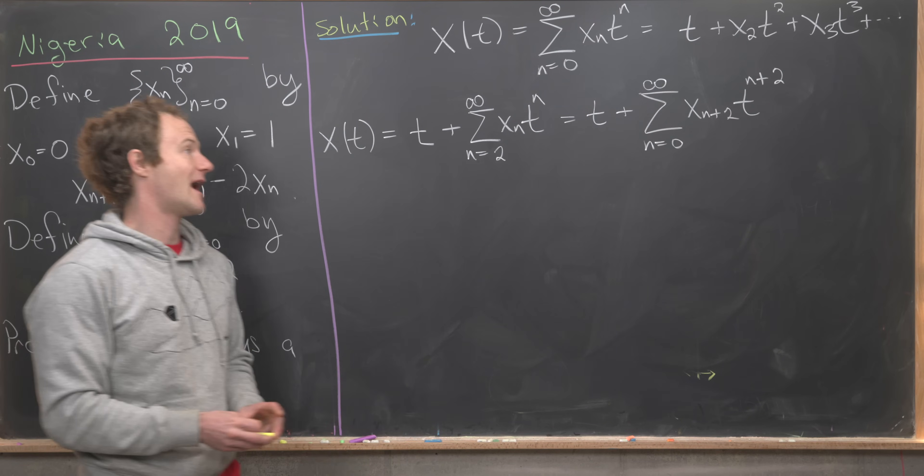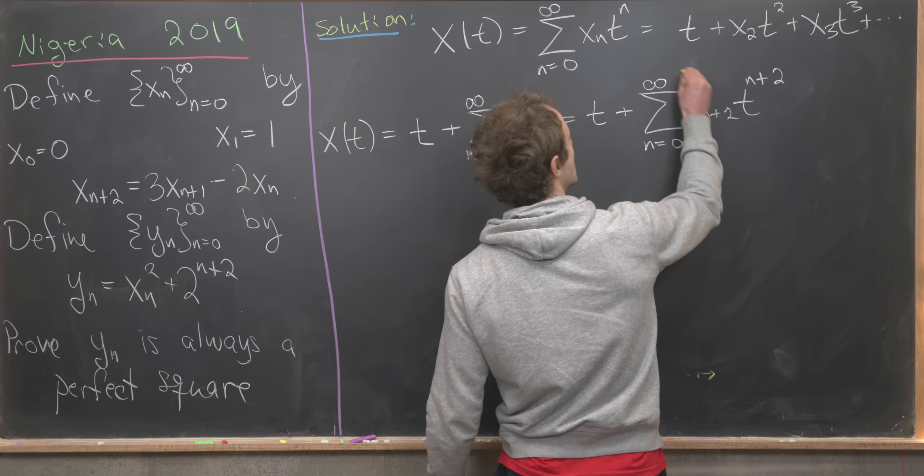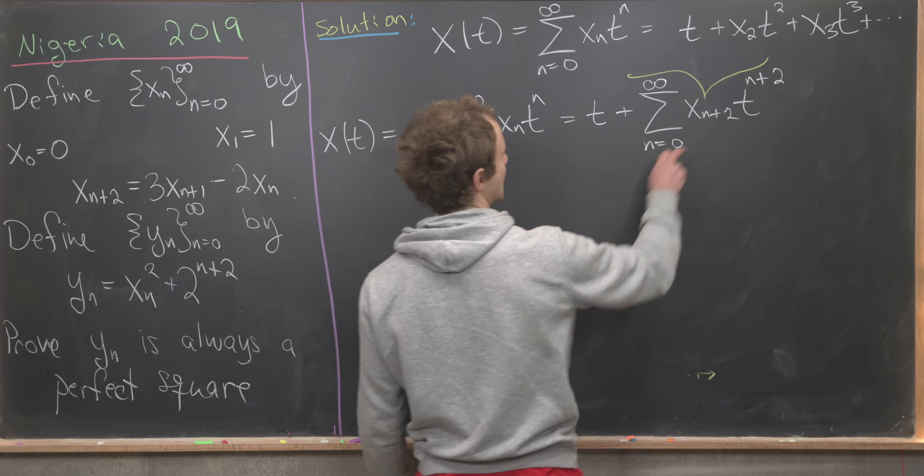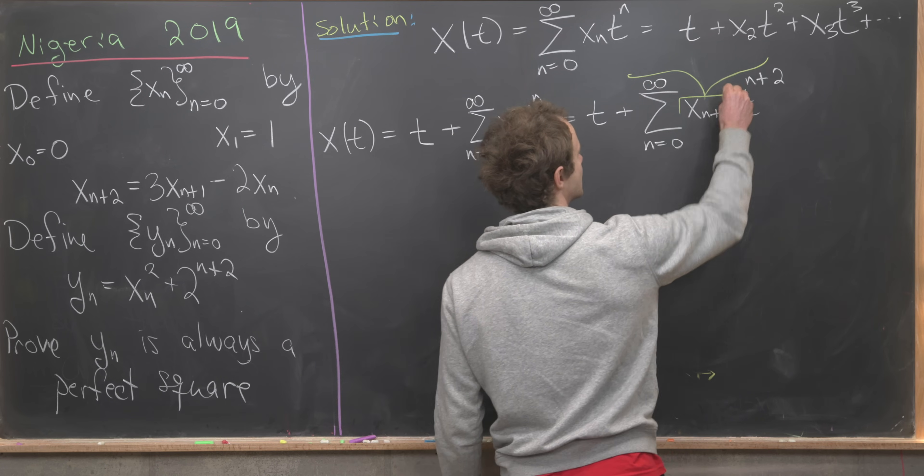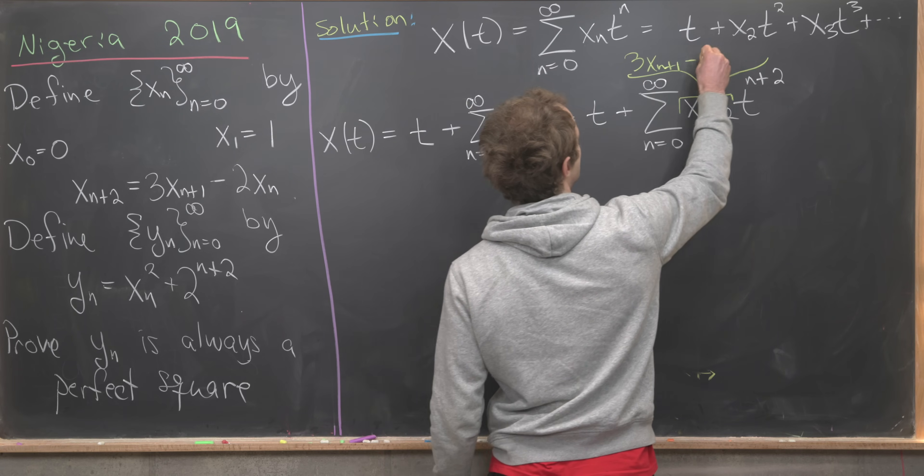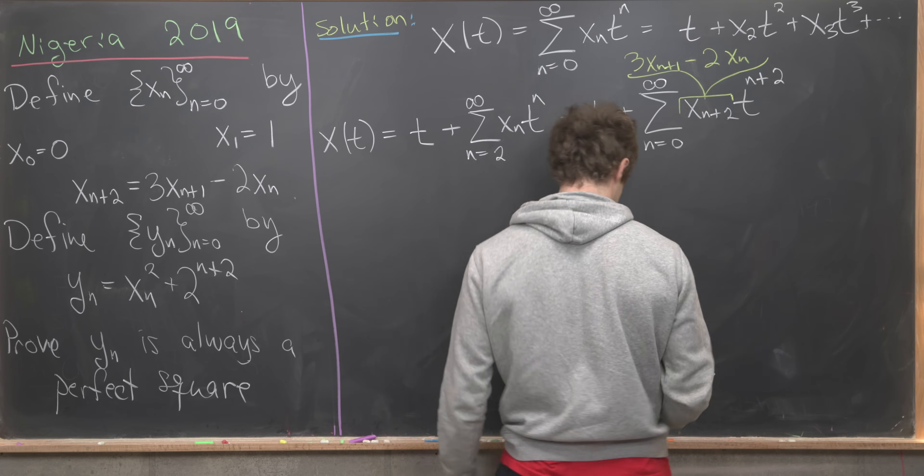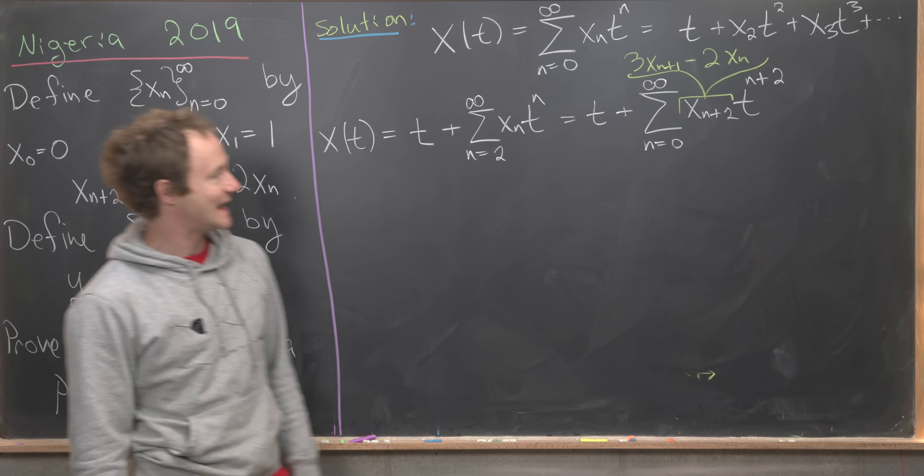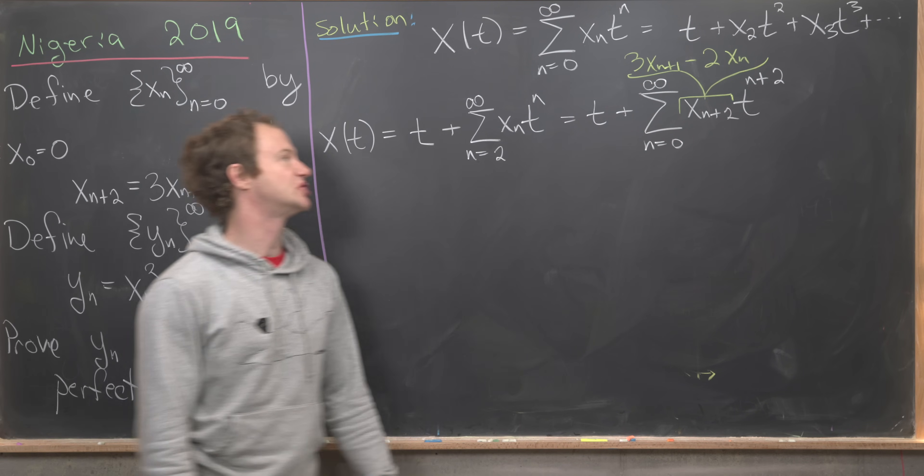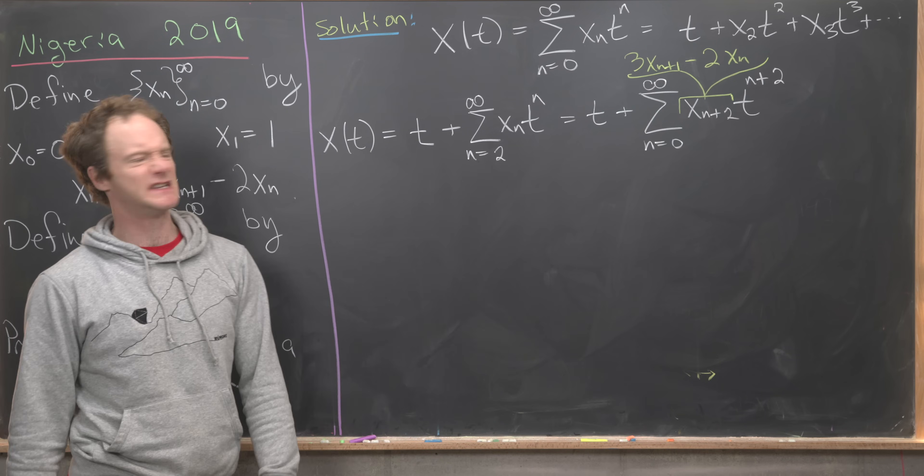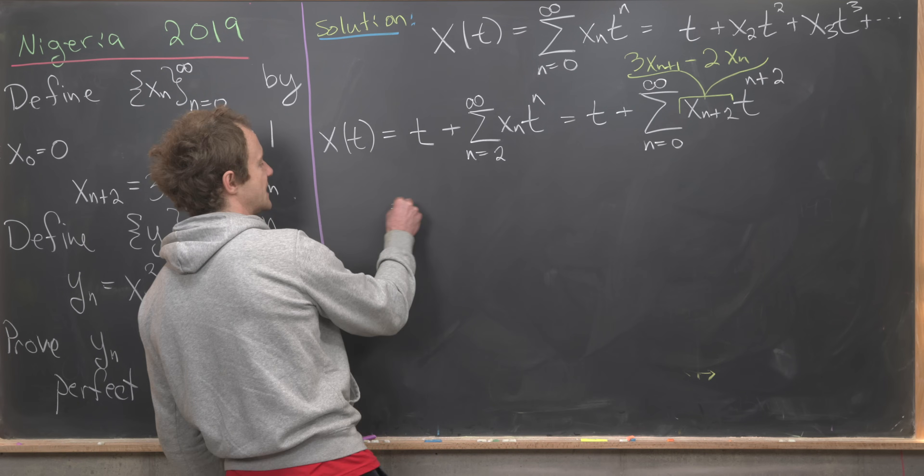Next up I will apply my recursion, so I know by the defining characteristic of this sequence that I can replace x sub n plus 2 with 3xn plus 1 minus 2xn. That's exactly what I'll do. But then simultaneously I'll split this into two sums and factor out a certain power of t from each.